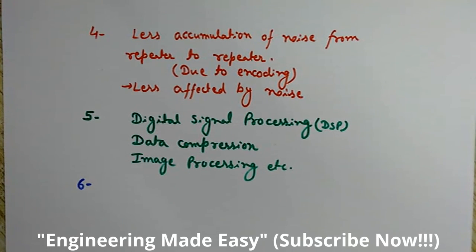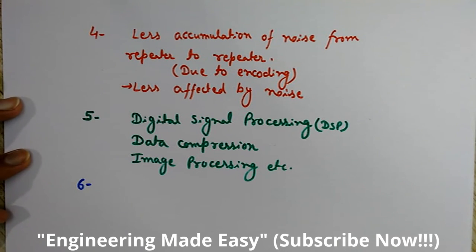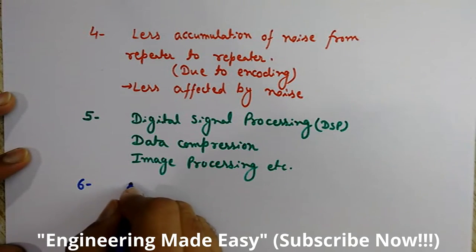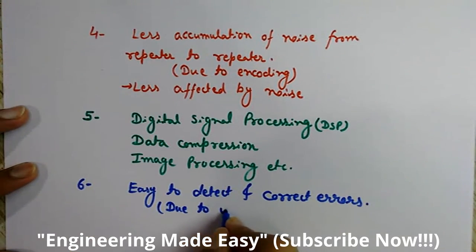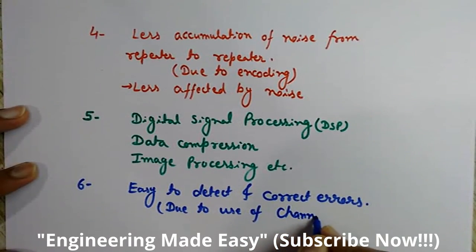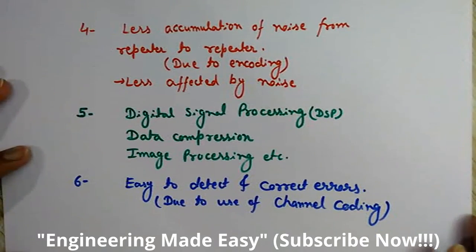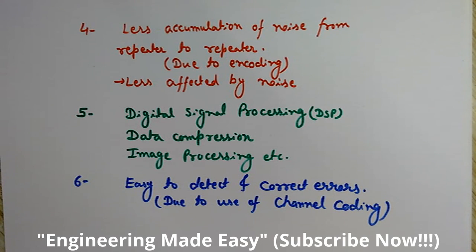The sixth advantage: it is easy to detect and correct errors in digital communication. This easy detection and correction of errors becomes possible due to the use of channel coding in digital communication.